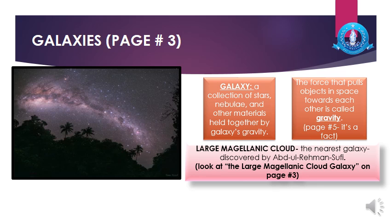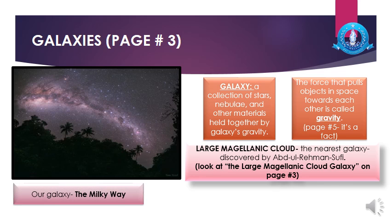The nearest galaxy to us is the Large Magellanic Cloud, and it was discovered by a Persian astronomer named Abdul Rahman Sufi — he was a Muslim. You can look at the Large Magellanic Cloud galaxy in your books on page number three. Our own galaxy is the Milky Way. There are so many galaxies in the universe; the one which belongs to us is the Milky Way, and our major star is the sun.